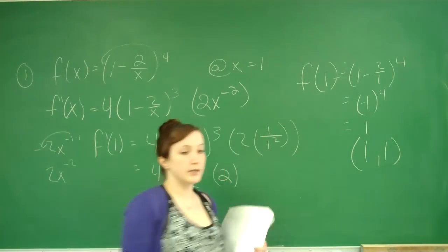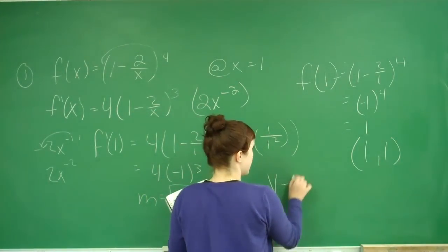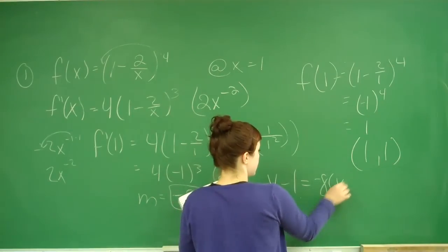That's the point we'll use. We've got our slope. Now we put it in point-slope form: y - 1 = -8(x - 1).